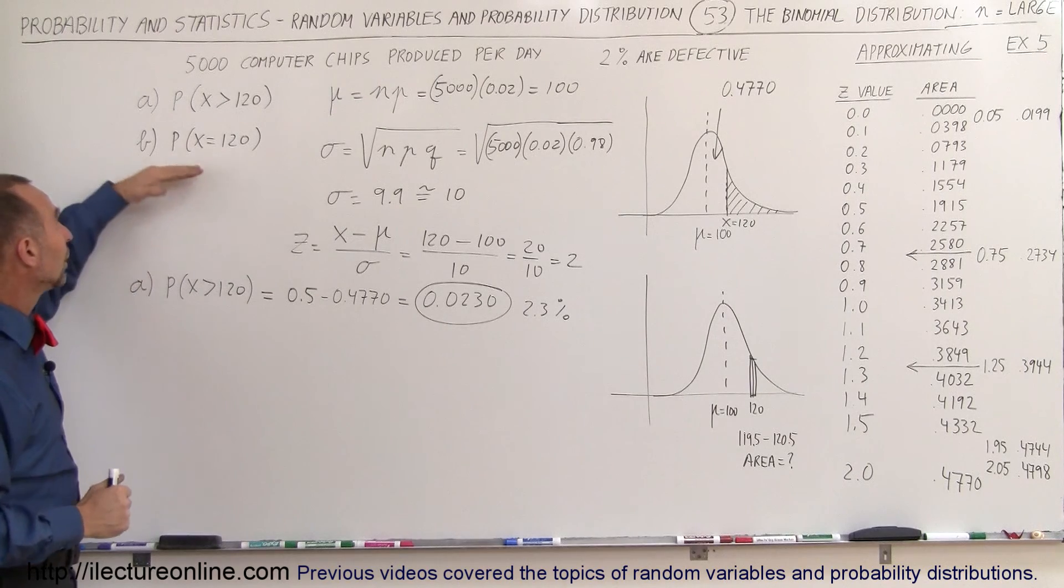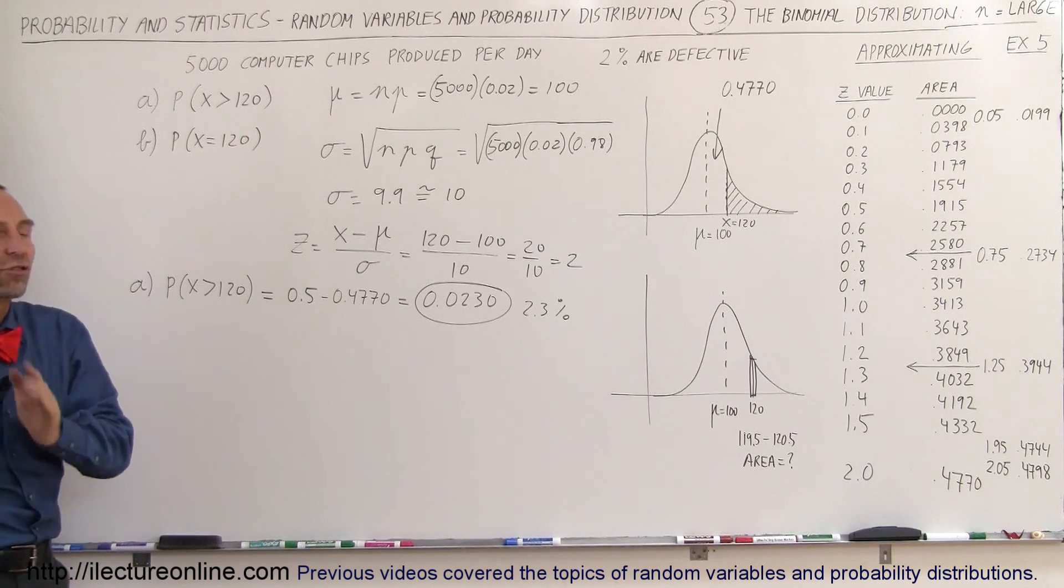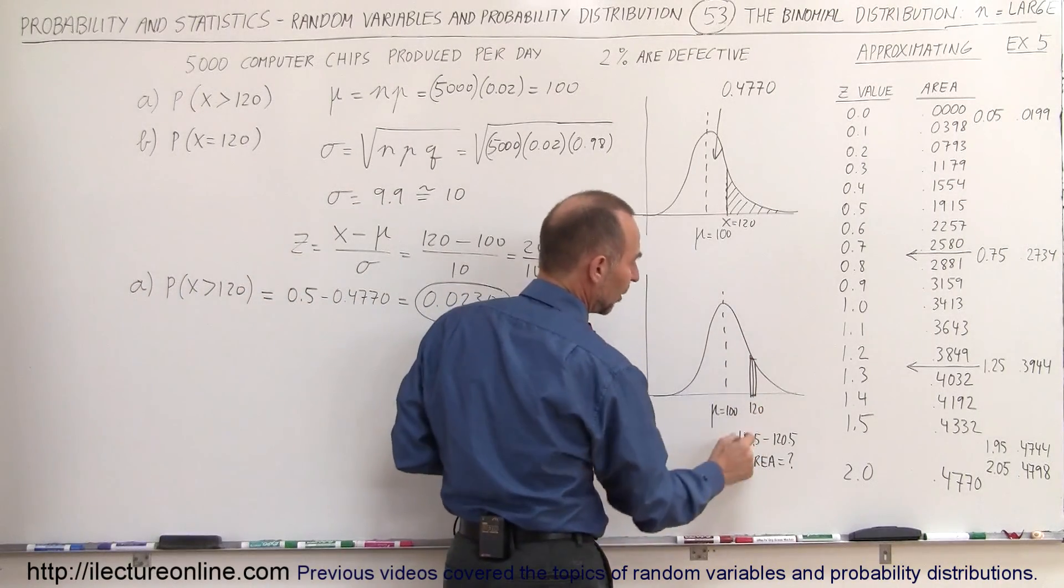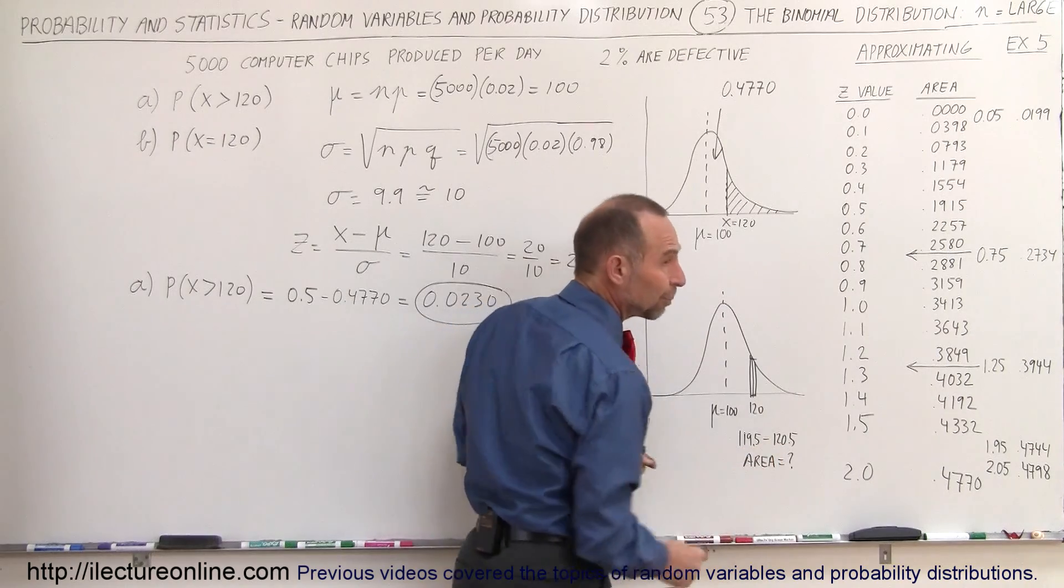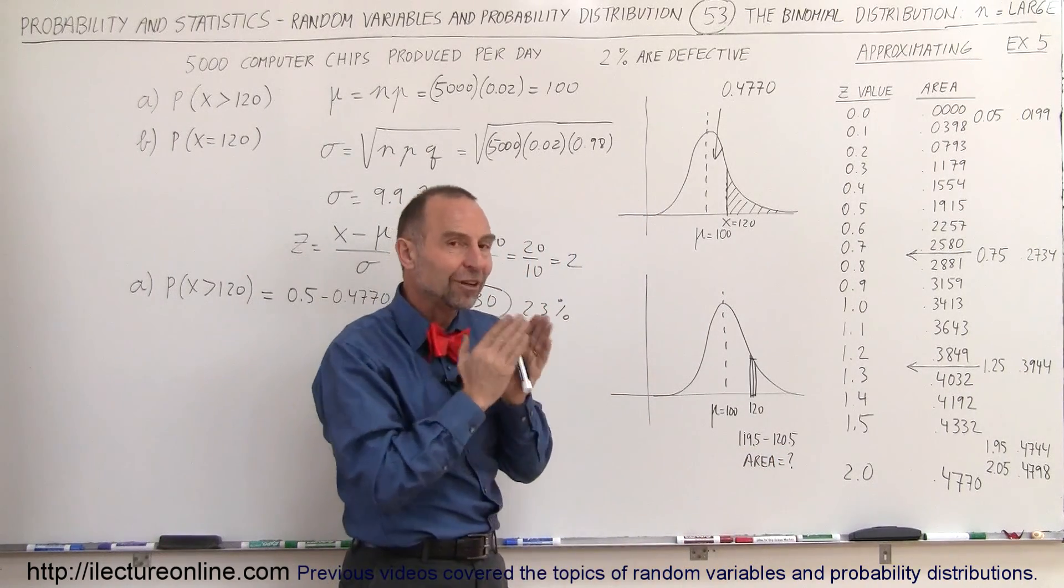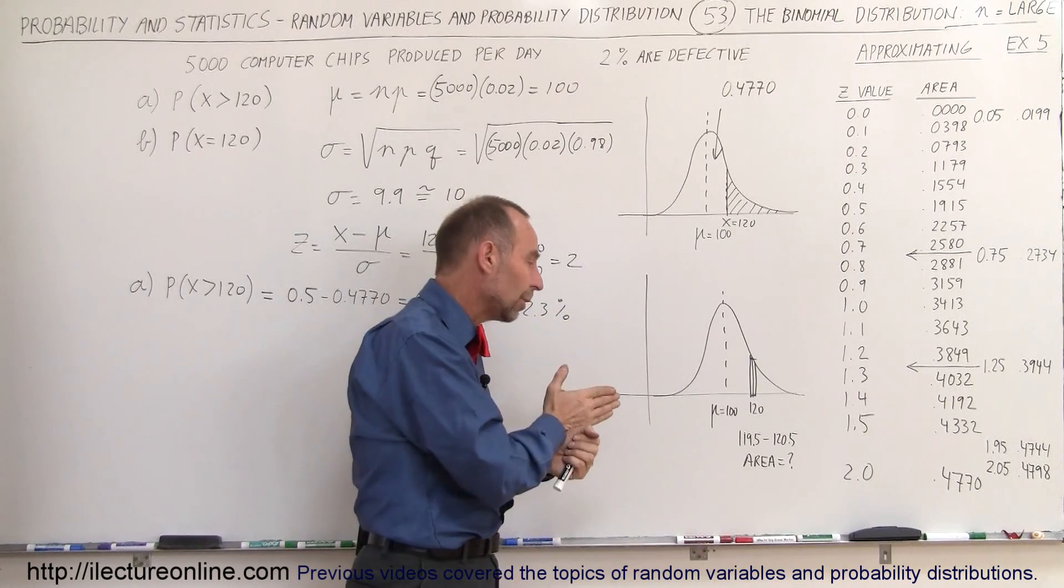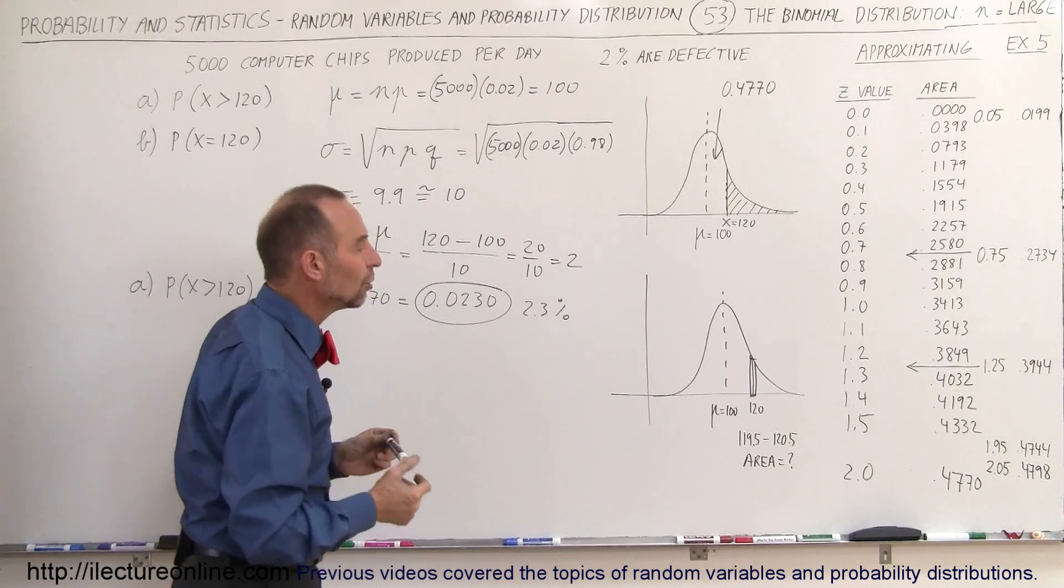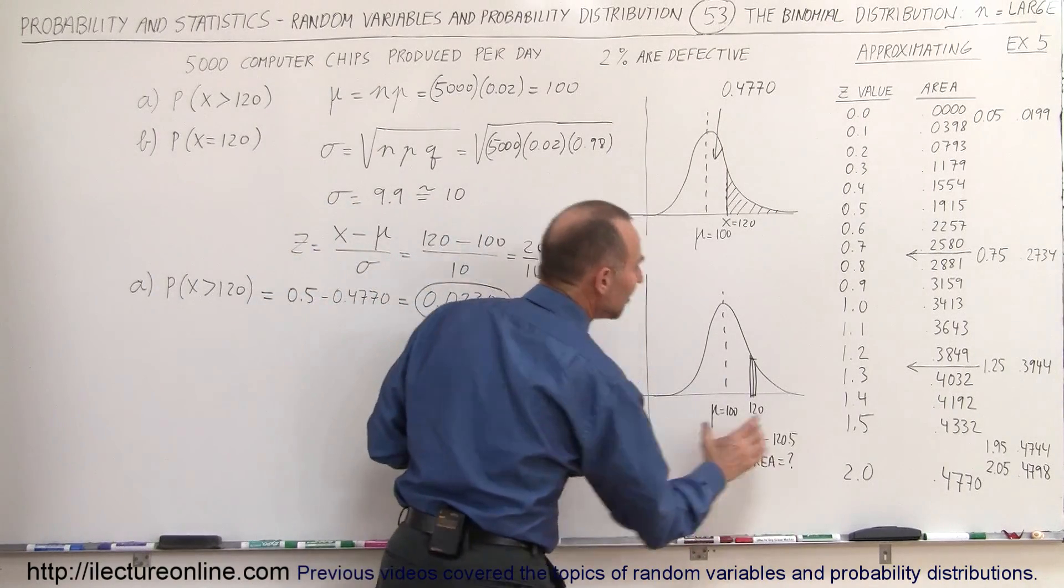Now we find out what the probability is that exactly 120 chips will be bad, which means we're looking for the area underneath the curve between 119.5 and 120.5, because we want to itemize it as an integer. So we need to find the equivalent Z values for that.